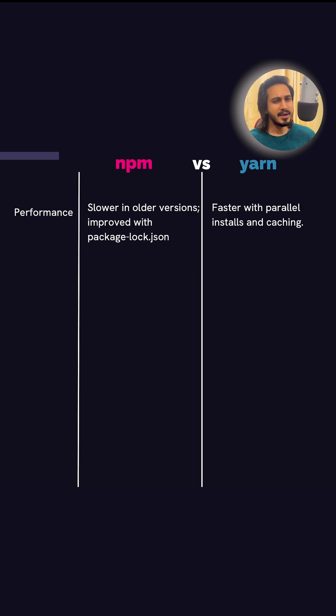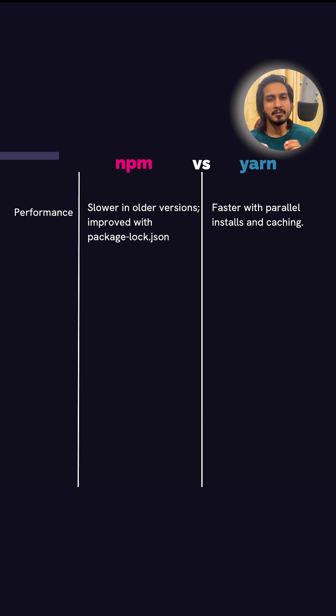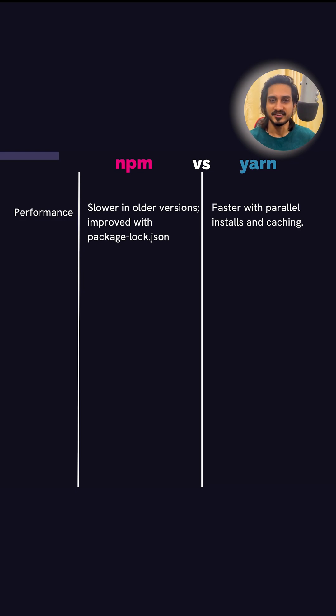Let's look at some of the differences. Based on performance, NPM is slower, but improved with package-lock.json in the latest version. Whereas YARN is faster with parallel installs and caching.